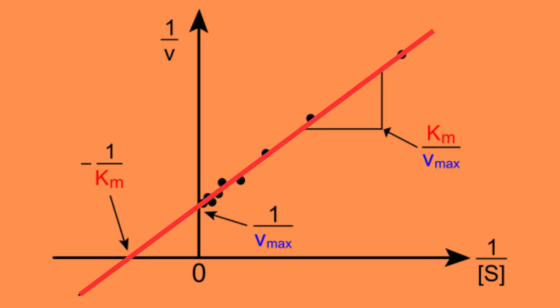Now imagine drawing an additional line on top of the already existing line by fixing the line at the y-intercept and rotating counterclockwise. We get the Lineweaver-Burk plot for competitive inhibition.